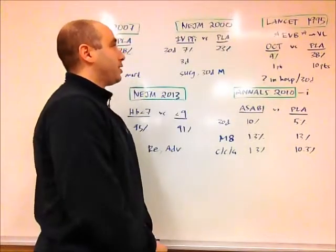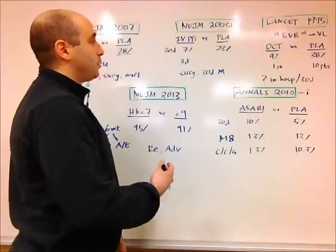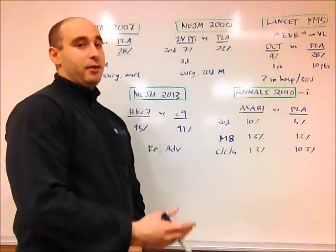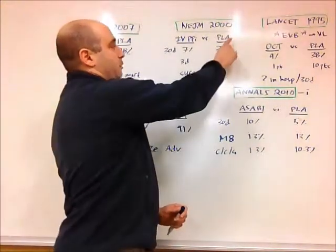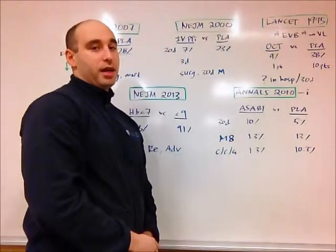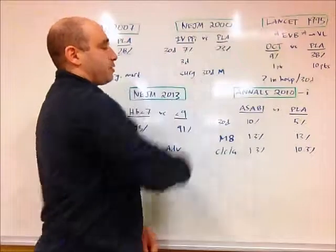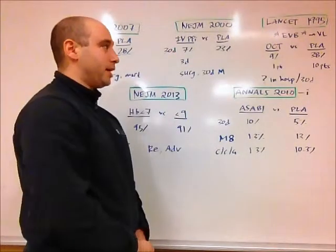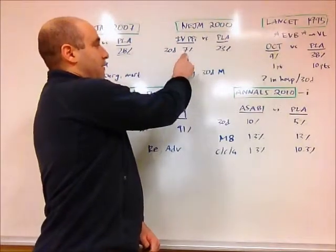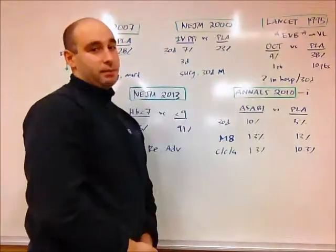The next study we're going to look at, a New England Journal study from 2000, looked at IV PPIs following endoscopy. What they did is patients who came in with bleeding peptic ulcers following endoscopy were subsequently randomized either to placebo or to IV PPI, which was a bolus of 80 milligrams followed by 8 milligrams per hour for 72 hours. Subsequently, both of these groups of patients were sent home on 20 milligrams of omeprazole daily. When they looked at 30-day re-bleeding rates, they found that only 7% in the IV PPI group re-bled, versus 23% in the placebo group.